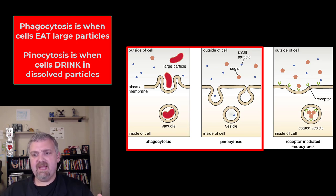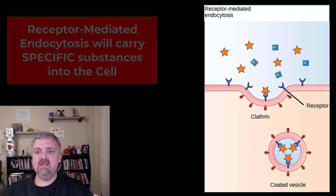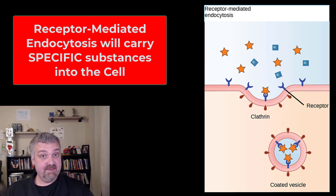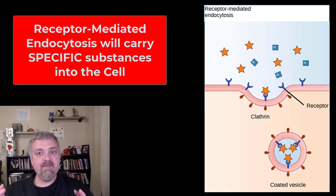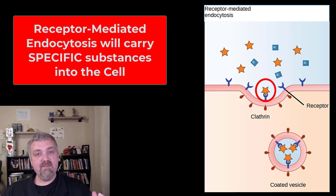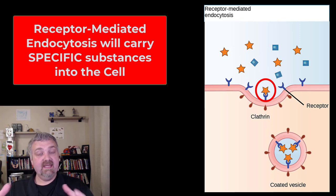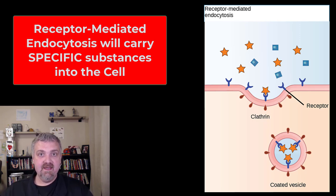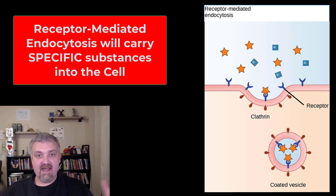So receptor-mediated endocytosis — like the name implies, it has a specific receptor. Think about receptors as a key looking for a lock or a lock looking for a key. With receptor-mediated endocytosis, they're not just indiscriminately grabbing things to eat or drink in — they're looking for something specific. Imagine those stars are iron. This is how red blood cells bring iron in, by looking for it specifically and grabbing it and swallowing it when it finds it. Iron's a great example.